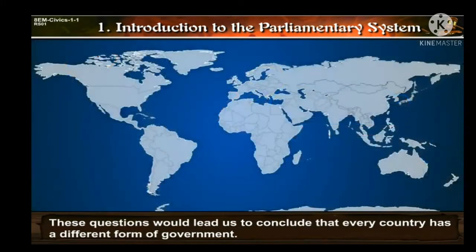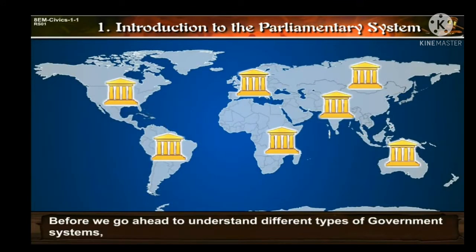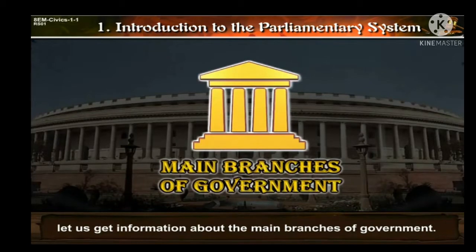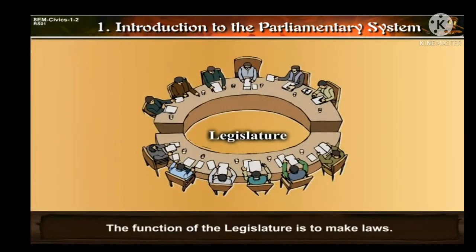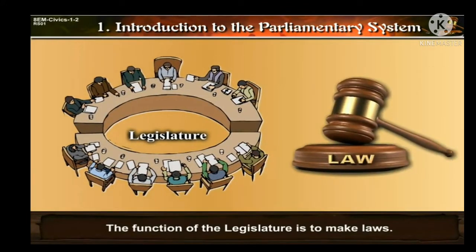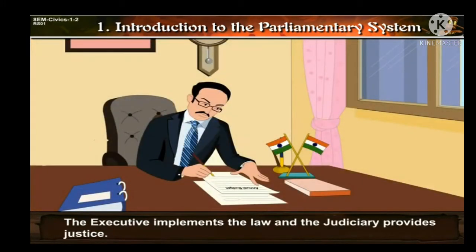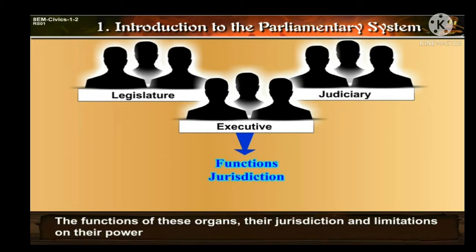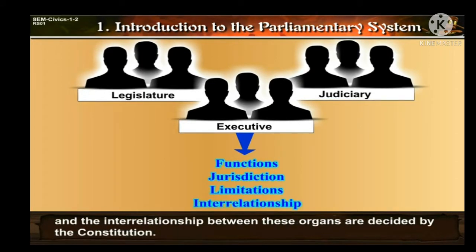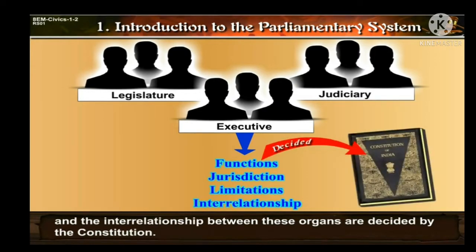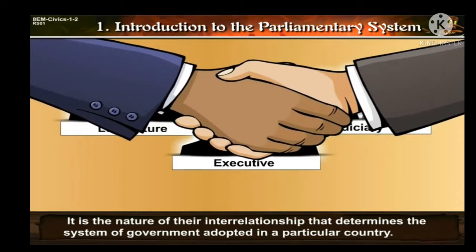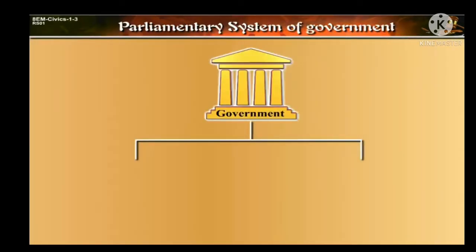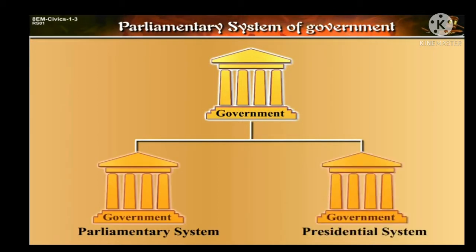These questions lead us to conclude that every country has a different form of government. Before we understand different types of government systems, let us get information about the main branches of government. The function of the legislature is to make laws. The executive implements the law and the judiciary provides justice. The function of these organs, their jurisdiction, limitations on their powers, and the interrelationship between these organs are decided by the Constitution. There are two types of government systems: parliamentary and presidential.